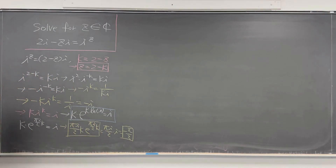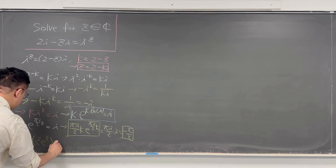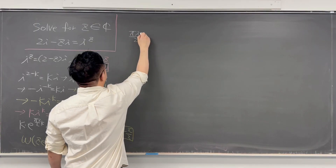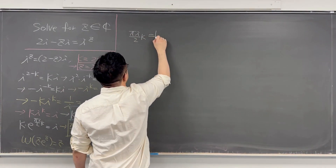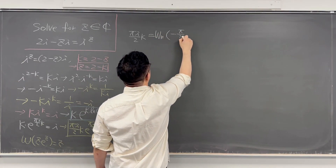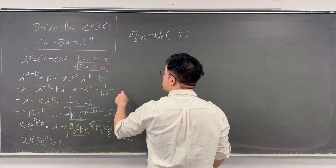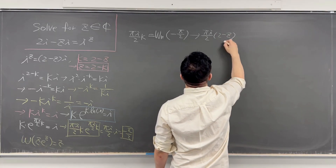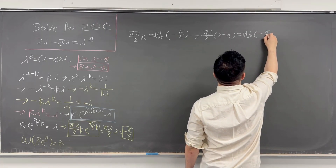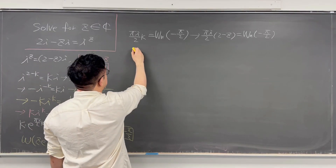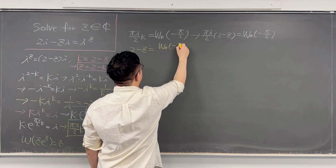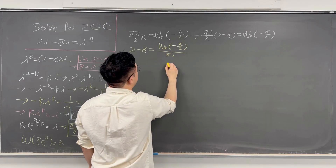So the left-hand side equals negative π/2, and we can apply the Lambert W function. Since W(x·e^x) = x, applying Lambert W gives us πi/2 times k equals W_n of negative π/2. Then since k was equal to 2 minus z, let's substitute back: πi/2 times (2 minus z) equals W_n of negative π/2. So 2 minus z equals W_n of negative π/2 divided by πi/2.